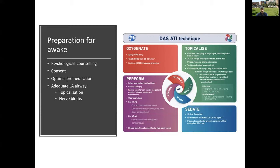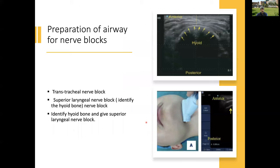Ensure the operator can readily see the patient monitor, infusion pumps, and video screen. Have all equipment ready including bougie, all kinds of video laryngoscopes, laryngoscopes, and bronchoscope, so they can be used in case of need or failure of a primary technique. Nerve blocks we can use include the superior laryngeal nerve block by identifying the thyroid bone using ultrasound, in combination with transtracheal or recurrent laryngeal nerve block — which is very effective.